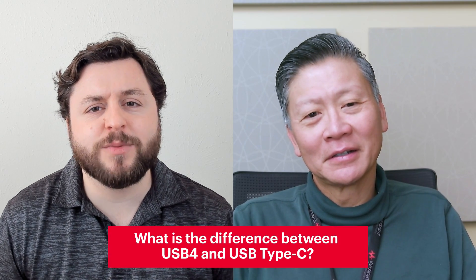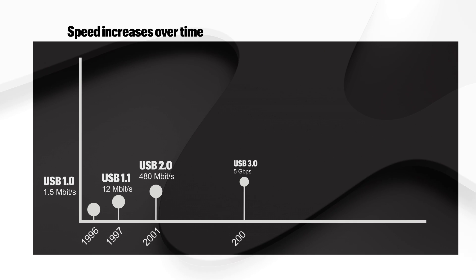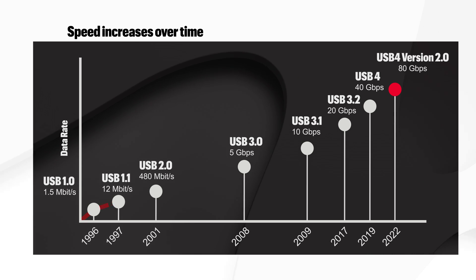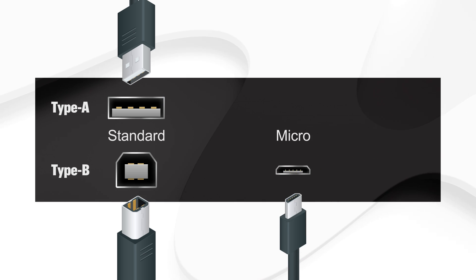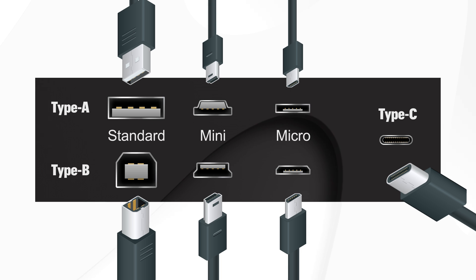So what is the difference between the connector USB Type-C and the signaling standard USB4? When I mention USB1, USB2, USB3, USB4, those are the signaling — the speeds and signals that run over the USB connector and wire. That's what you test. When folks use words like standard A, standard B, micro B, mini B, Type-C, that is the physical connector. Signals like USB2, for example, can be sent over a standard A connector, standard B, or a Type-C connector. That's how you differentiate between the signaling technology and the physical connector.